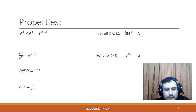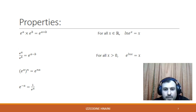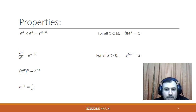Properties of the exponential function: eᵃ · eᵇ = eᵃ⁺ᵇ. eᵃ / eᵇ = eᵃ⁻ᵇ. (eᵃ)ⁿ = eⁿᵃ. e⁻ᵃ = 1/eᵃ. For all x ∈ ℝ, ln(eˣ) = x. And for all x > 0, e^(ln x) = x.